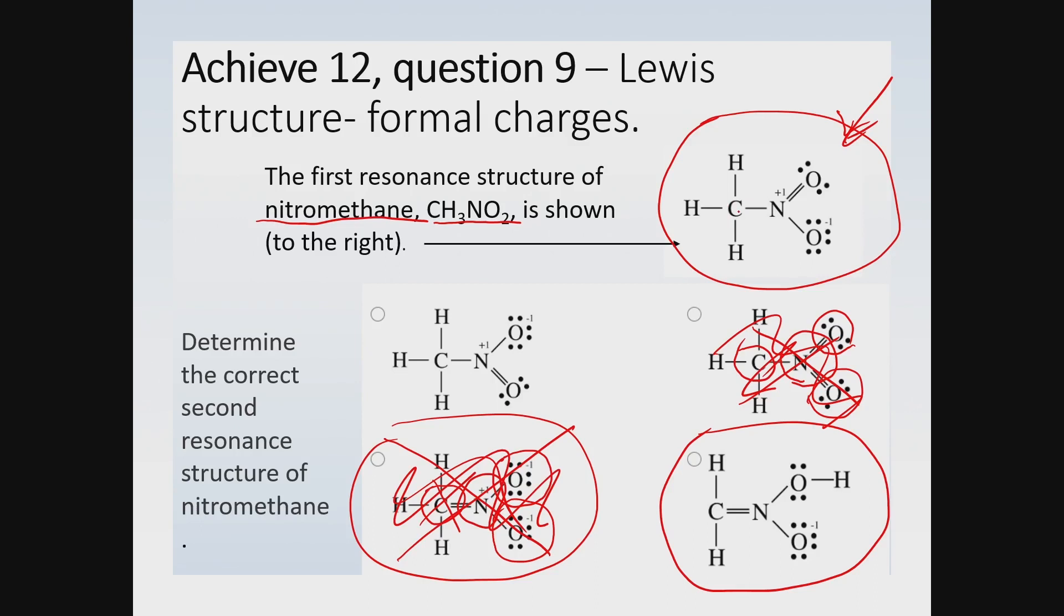Look at the carbon here. Notice that this carbon has three hydrogens attached to it, and also there is a nitrogen attached to it. And leaving the nitrogen, you have two oxygens attached to it. So that's the basic connectivity of the atoms in the molecule.